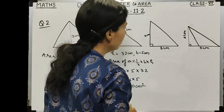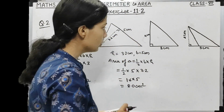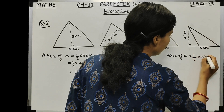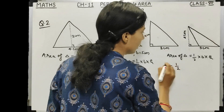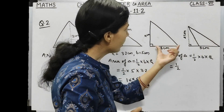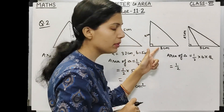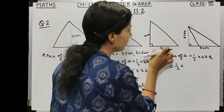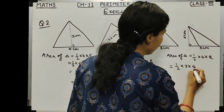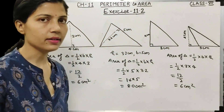For the third figure, this is a right-angle triangle where both sides serve as height and base. Since both sides are perpendicular, either can be the base. If we take 3 cm as base, then height is 4 cm. Area = ½ × 3 × 4 = 12/2 = 6 cm².